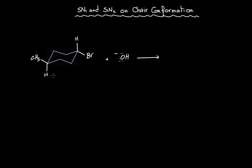Hi, this is Dr. Hayek, and in this video we will be practicing SN1 and SN2 mechanisms on chair conformations. Starting with the following example, we can see that this alkyl halide is secondary, and OH⁻ is a strong nucleophile. When we have a secondary alkyl halide with a strong nucleophile, the mechanism will therefore be an SN2 mechanism.